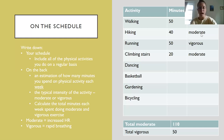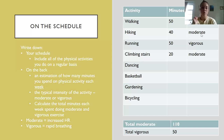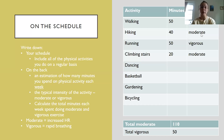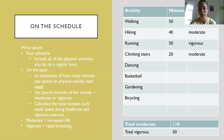In the second column, estimate how many minutes you spend on each physical activity each week — for example, walking 50 minutes a week, hiking 40 minutes a week. In the right-hand column, label whether each activity is moderate or vigorous. Moderate means increased heart rate; vigorous means rapid breathing. Have this done before class on Monday. I recommend creating a table in Microsoft Word with three columns, then tallying up total minutes in moderate activity and total minutes in vigorous activity.